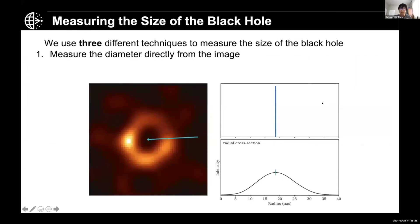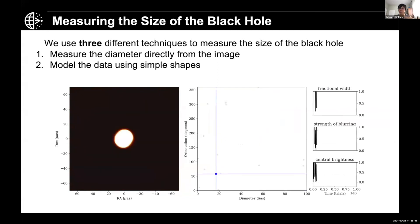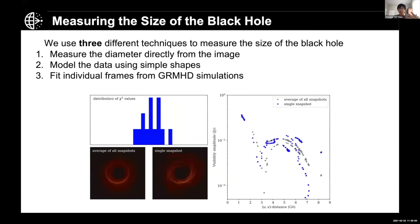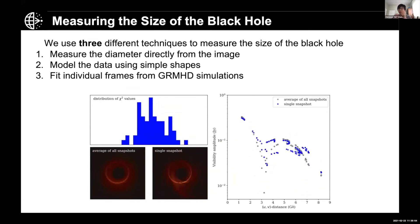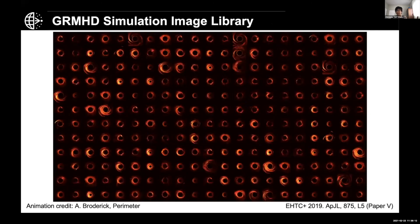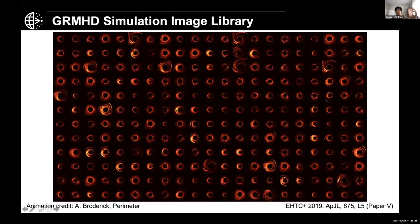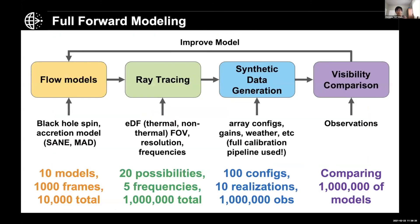We have multiple methods to compare the image with observations. For example, we can work in the image domain to figure out the size of the black hole and use that to test general relativity. We can also fit very simple geometric models to the data. Another approach is using a large simulation library — the black hole image simulations I talked about at the beginning — and fitting those to the data. All of these steps are computationally expensive, though embarrassingly parallelizable, so that's where Pegasus is very useful.